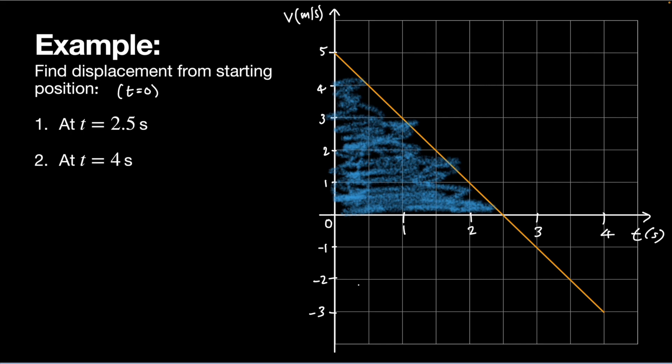Displacement from starting position means at t equals zero. So it's between t equals zero and t equals 2.5 seconds. My displacement is just the area and that's a triangle. The area is a half times the base, 2.5, times the height, times five, which is 6.25 meters.